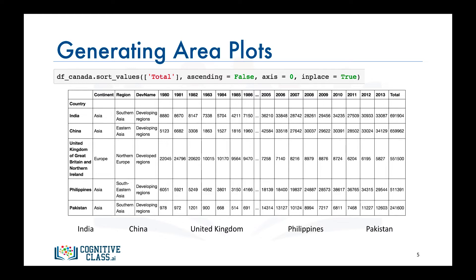Can we now go ahead and generate the area plots using the first five rows of this data frame? Not quite yet. First, we need to create a new data frame of only these five countries, and we need to exclude the total column. More importantly, to generate the area plots for these countries, we need the years to be plotted on the horizontal axis and the annual immigration on the vertical axis. Note that matplotlib plots the indices of a data frame on the horizontal axis, so the countries would be plotted on the horizontal axis. To fix this, we need to take the transpose of the data frame.